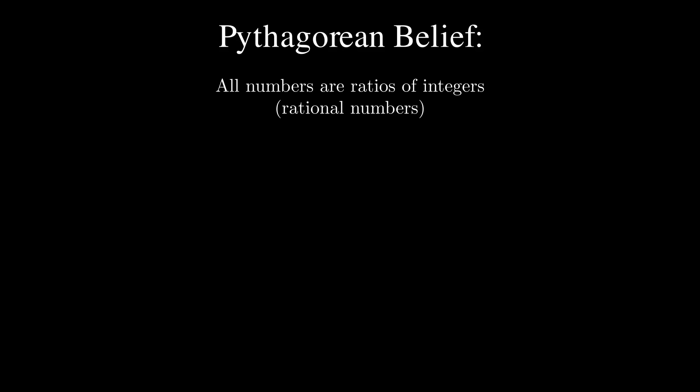To be fair, some of these exact historical details are uncertain, but the story goes that Pythagoras discovered irrational numbers, something that shook their belief system to their core. If we consider the length of a diagonal of a square with side lengths 1, according to the Pythagorean theorem, this diagonal's length should be square root of 2.